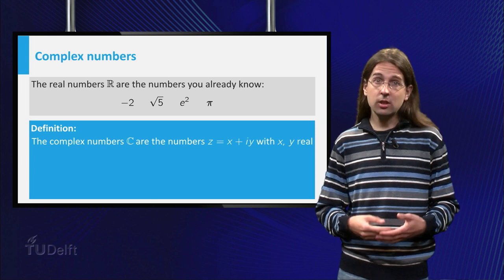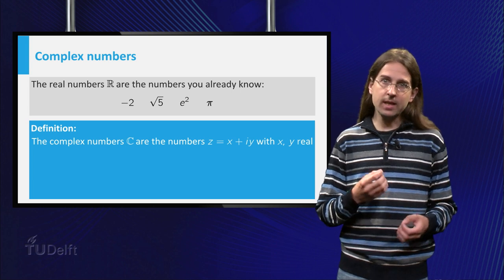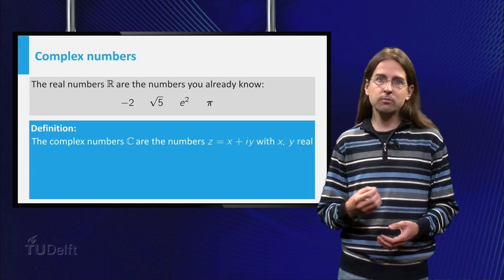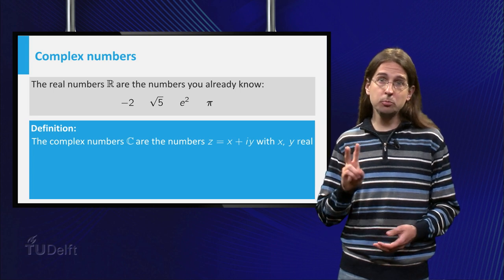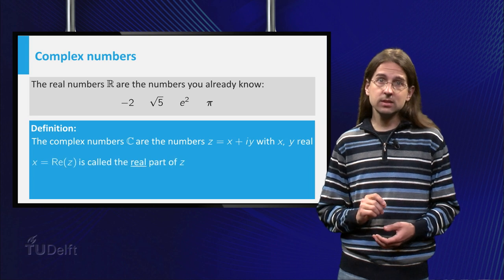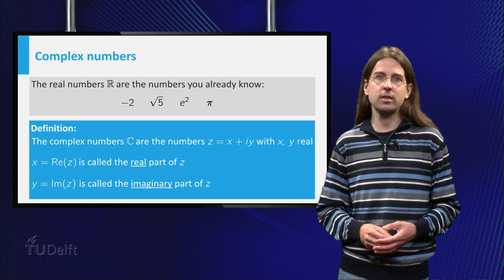Complex numbers are by definition all numbers z, which can be written as x + iy, with x and y real numbers. These numbers consist of two parts. x is called the real part of z and y is called the imaginary part of z.